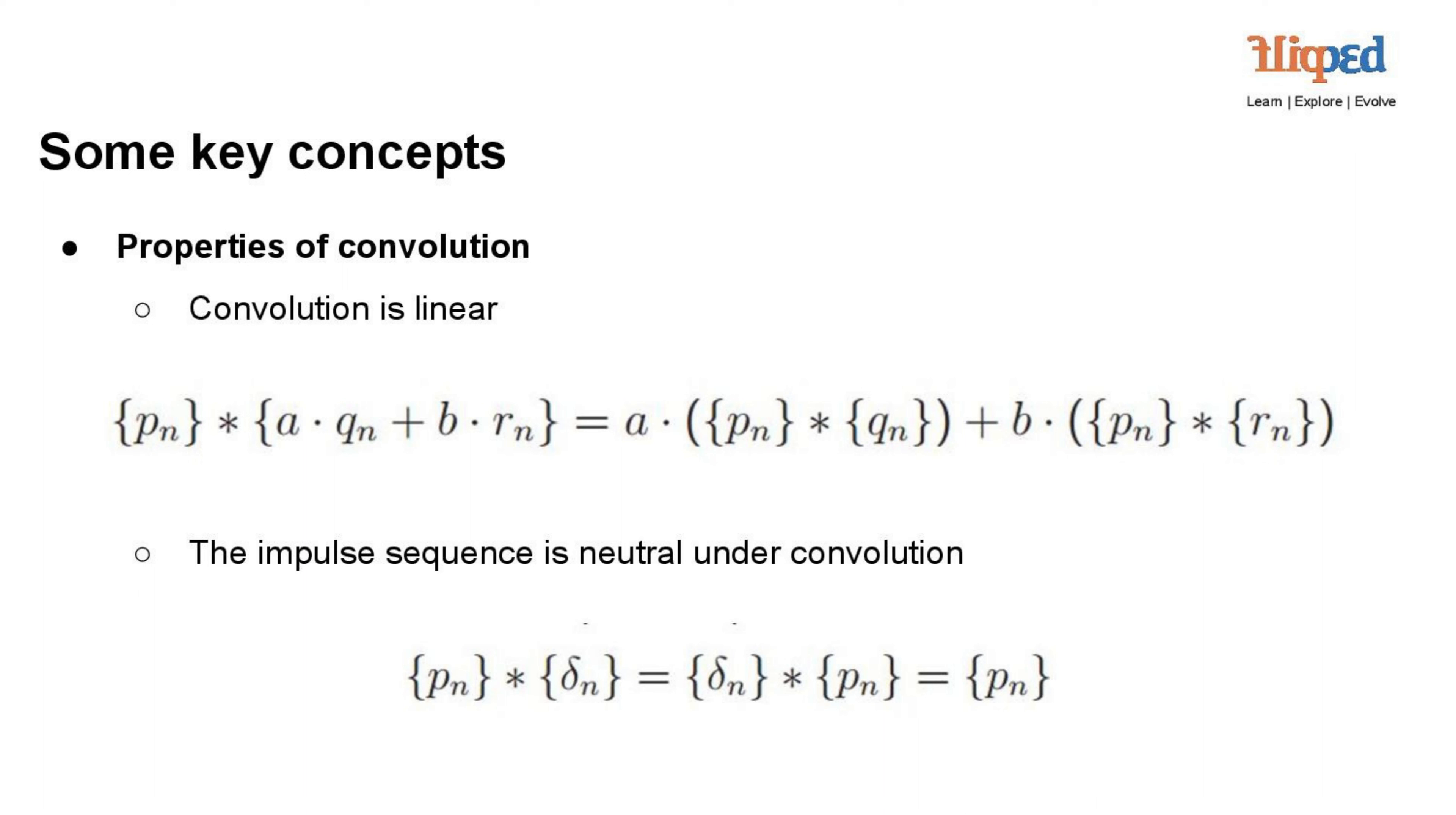A·[p(n) into q(n)] plus B·[p(n) into q(n)]. This property is fundamental in analyzing and understanding the behavior of linear time-invariant systems and simplifies the computation of convolutions involving scaled signals.